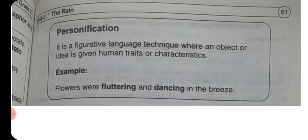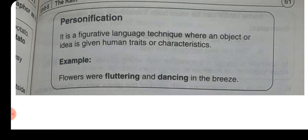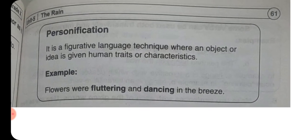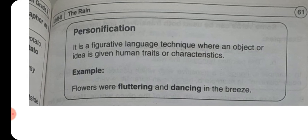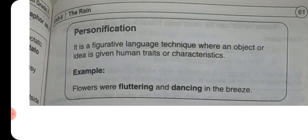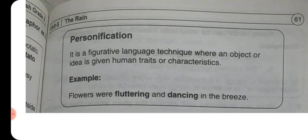For example, flowers جو ہیں ان کو اس طرح سے بیان کیا جا رہا ہے کہ وہ جیسے انسان ہوں. Flowers were fluttering and dancing in the breeze یعنی a lifeless object and unlike object is presented as human being. اس کو انسانی خصوصیات کے ساتھ بیان کیا جاتا ہے it is called personification.